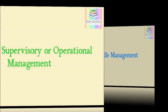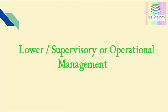The third level of management is lower level management, or operational level management, or supervisory management. This level of management comprises foremen and supervisors. Supervisors directly oversee the efforts of the workers. Their authority and responsibility is limited according to the plans formulated by the top management. Supervisory management plays a very important role in the organization because they interact with the workers and pass instructions of the middle management to the workers. Through their efforts, they maintain the quality of output, minimize waste of materials, and maintain safety standards.